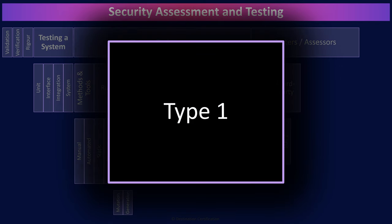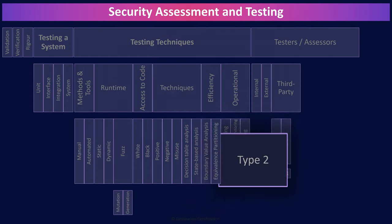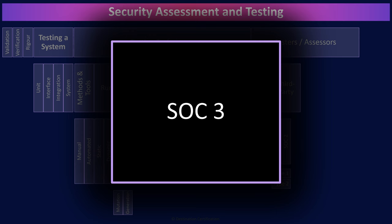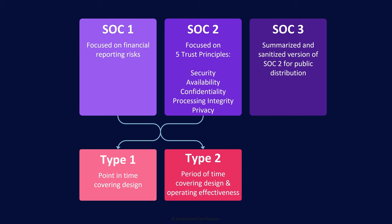Just to make things confusing, there are two types of SOC 1 and SOC 2 reports. A type 1 report looks at the design of a control at a point in time, essentially reviewing some paperwork on a Monday. Type 2 reports look at the design and operating effectiveness of a control over a period of time, typically a year. The auditors are testing to see if a control was operating effectively over a year through sampling and other methods. Type 2 reports are way more useful. A SOC 3 report is a sanitized, summarized version of a SOC 2 for public distribution. Basically, SOC 3 reports are a marketing tool. To sum it up, as security professionals, we want SOC 2, type 2 reports. And here is a diagram depicting the three SOC reports and type 1 and type 2.